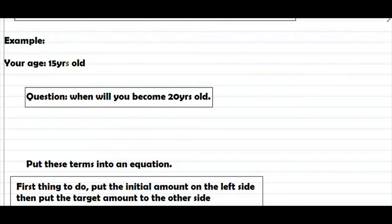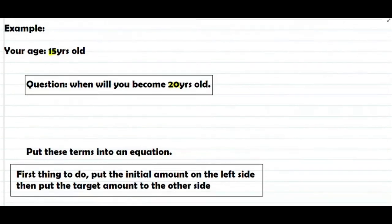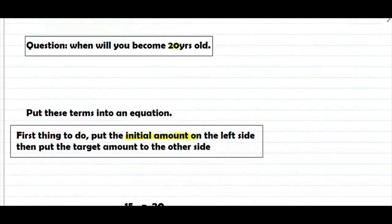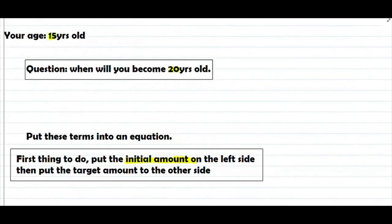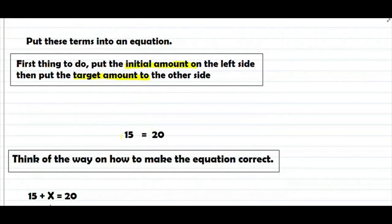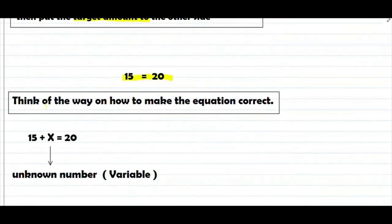Yung gagamitin mo sa equation is itong 15 and 20. Galagay mo siya ngayon sa equation. Put the initial amount on the left side, then put the target amount on the other side. Yung initial amount — ito yung initial amount mo before pa magkaroon ng problem. Ang initial mo ay 15 years old talaga. Put the target amount on the other side — ang target amount mo is 20 years old. Think of the way on how to make the equation correct.